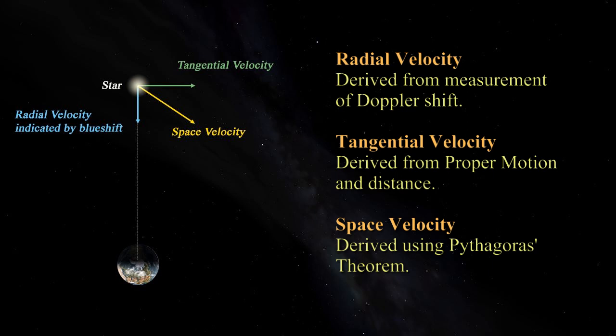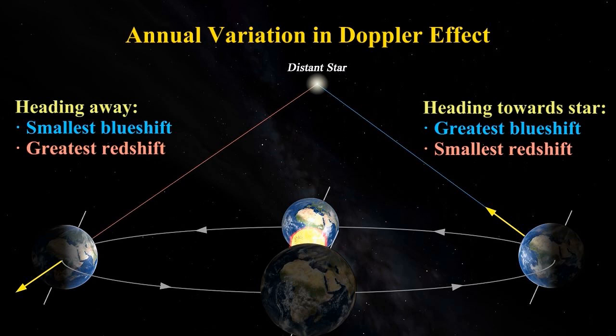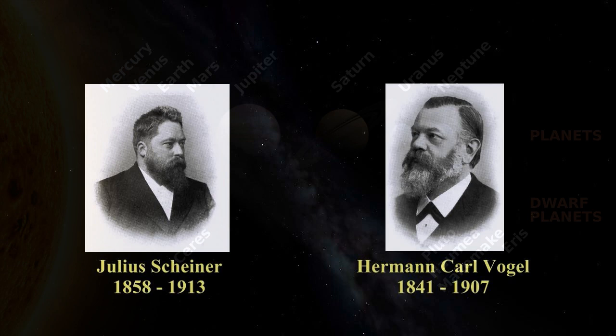We also looked at Doppler shift and its application to the stars in finding one component of their velocities through space. We also saw how it provides another means of confirming Earth's annual orbit around the solar system's barycenter.